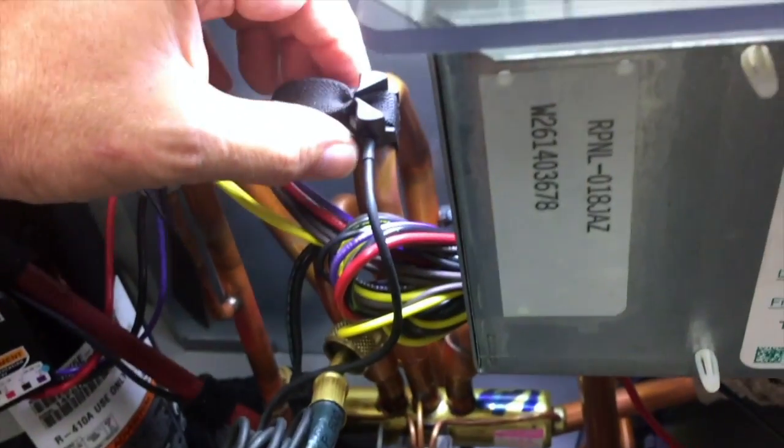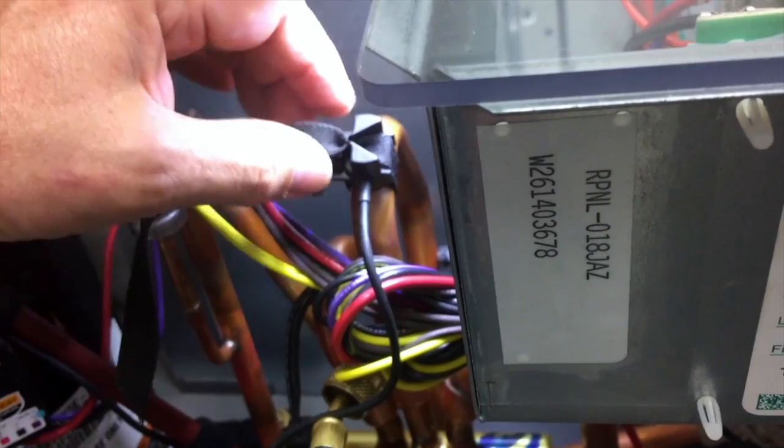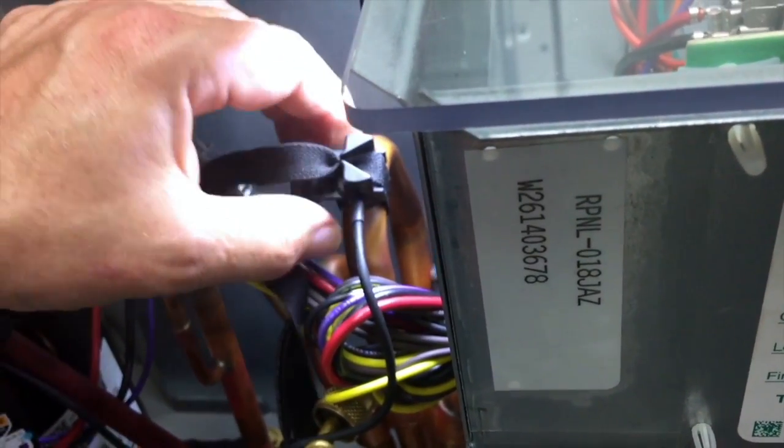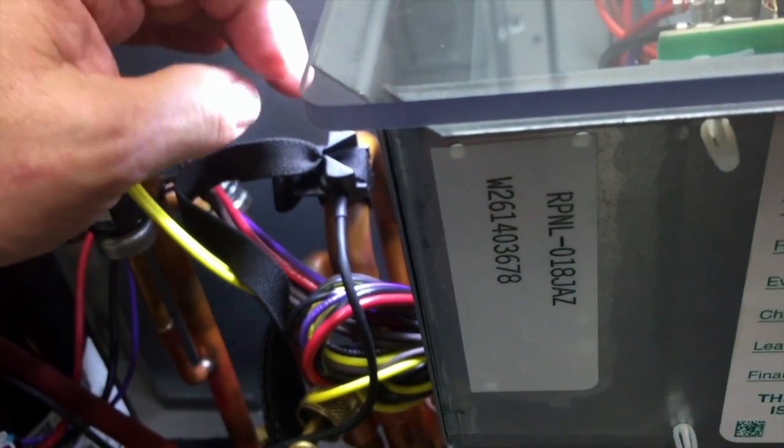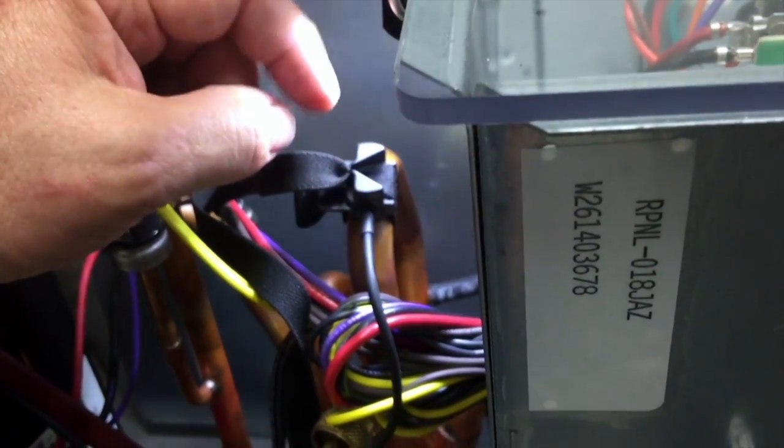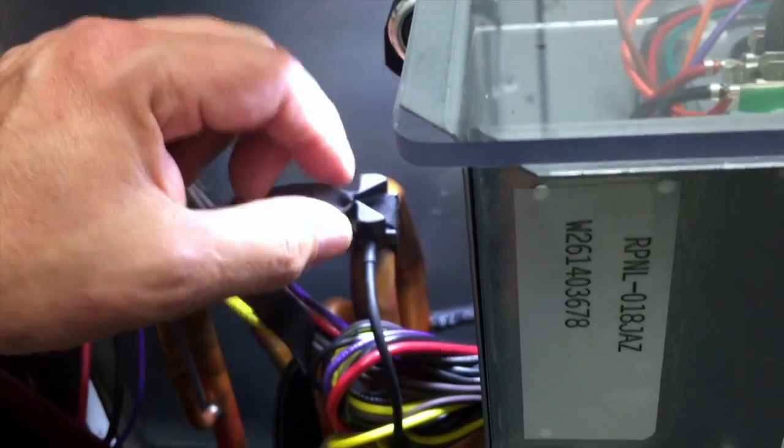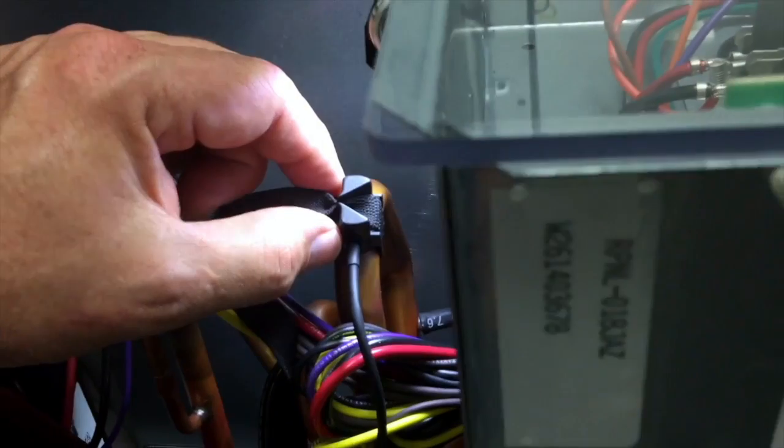One thing you never want to do with these probes is rock them on the line. They grip extremely tight. You can't even lift this on here. If you rock it on the line, you're going to damage the probe. If you need to sand your lines because they aren't clean, sand them with sandpaper, not with a probe, or you're going to damage it.